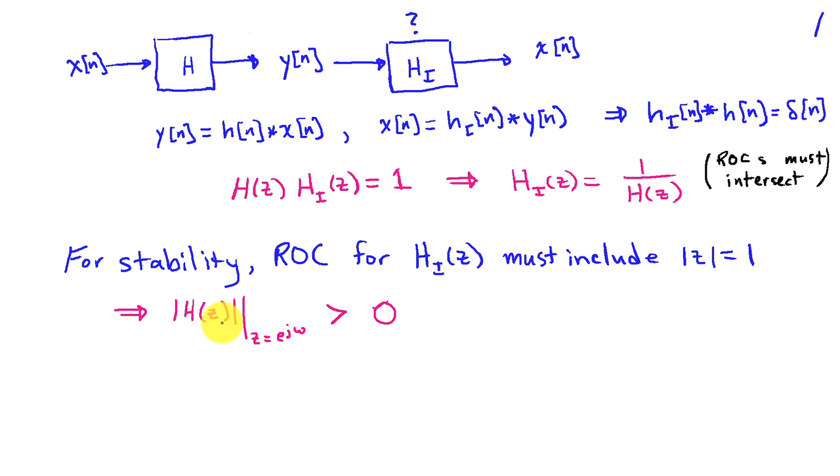This implies that the magnitude of H of z evaluated at z equals e to the j omega, in other words the DTFT, must be greater than 0. It can't equal 0 because then we would have a situation where our inverse system would be undefined.